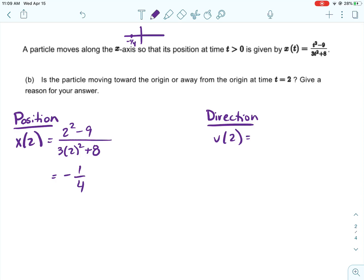We would just get negative 1 fourth for the position. So that means that the particle is going to be 0.25, or is going to be 1 fourth of a unit away from 0, on the left side.